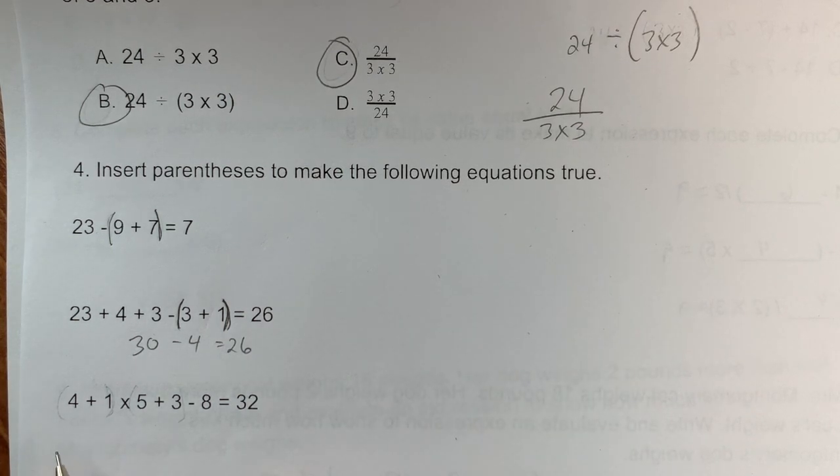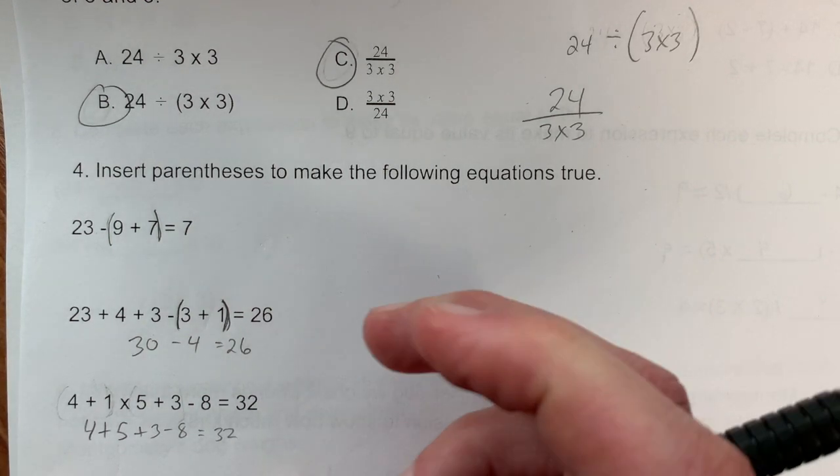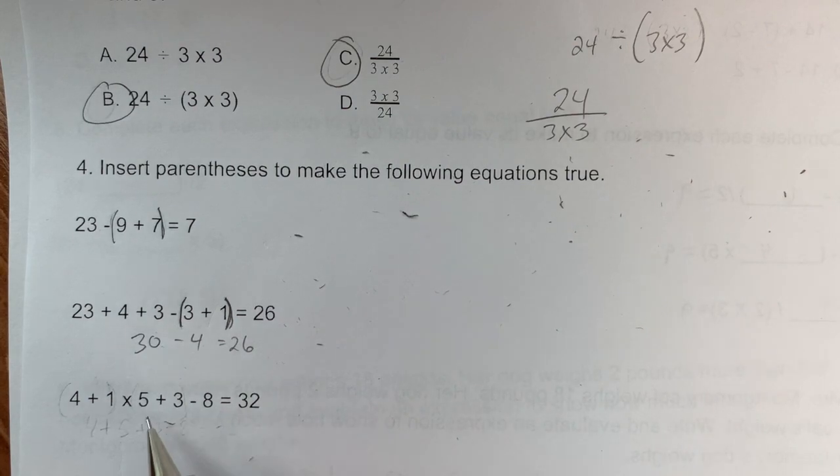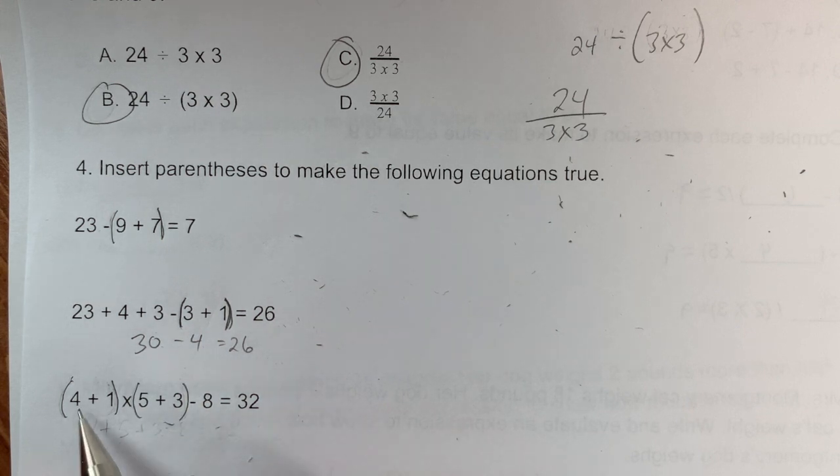Problem 4c: Using order of operations, multiplication comes first: 1 × 5 = 5, then 4 + 5 = 9, + 3 = 12, - 8 ≠ 32. I need a larger number, so I'll add before multiplying. Putting parentheses: (4 + 1) × (5 + 3) - 8. Now: 5 × 8 = 40, and 40 - 8 = 32, which works.